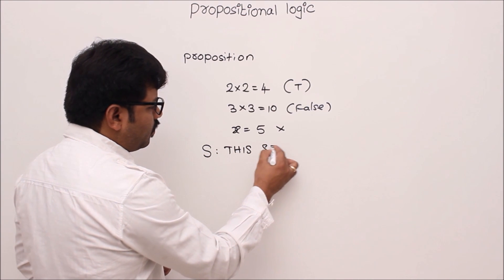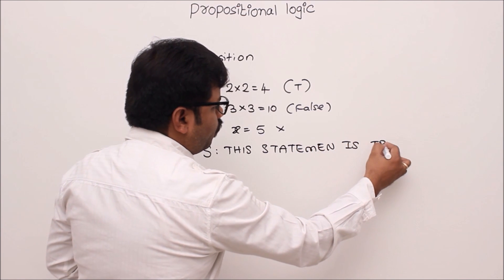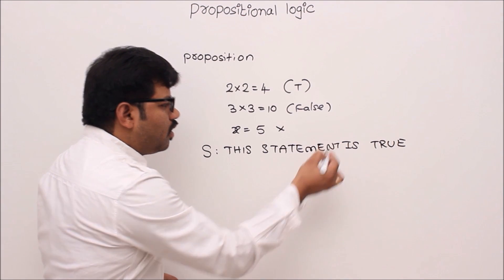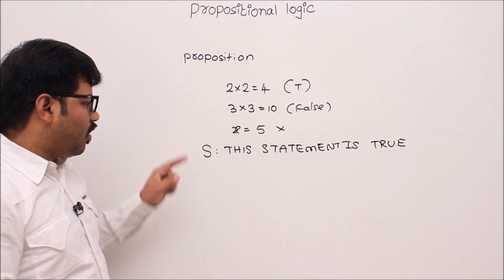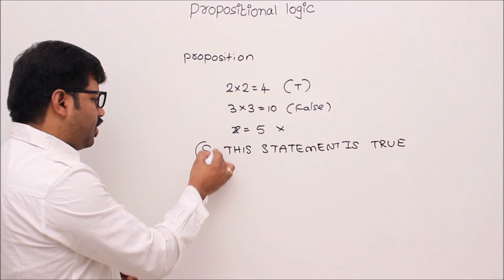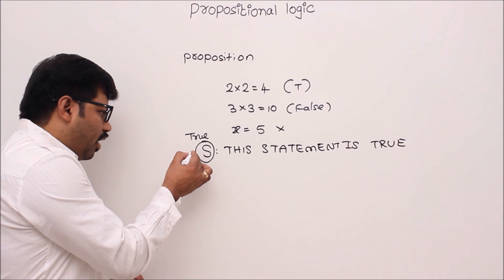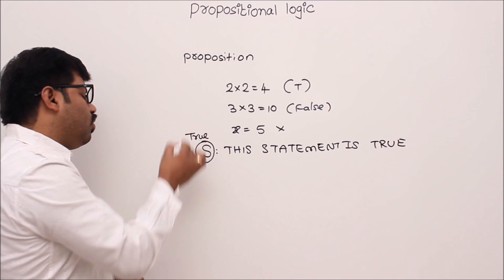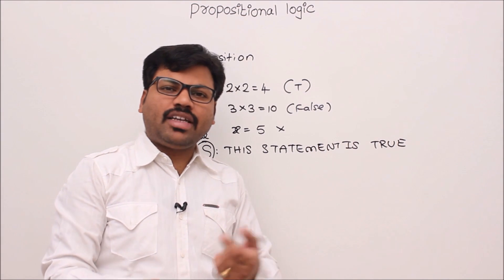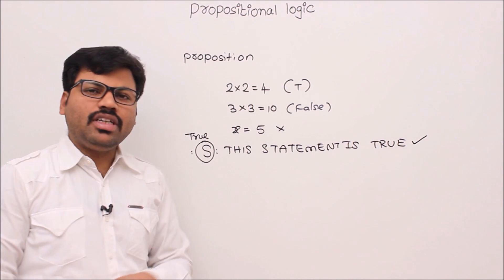Consider the statement: 'This statement is true.' This statement refers to itself, claiming that it is true. If we assign it the value true, then the statement is true and the meaning of the statement also says it's true — they match. So we are able to assign a truth value, which means this is perfectly a proposition.